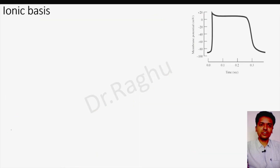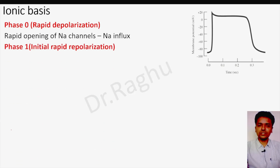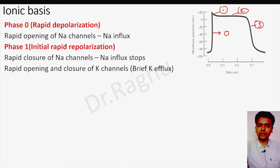To revise: phase zero is the phase of rapid depolarization, caused by rapid opening of sodium channels resulting in sodium influx. Phase one is initial rapid repolarization — the sodium channels that were open during phase zero rapidly close, stopping sodium influx, and there is rapid opening and closure of potassium channels, causing a brief potassium efflux resulting in initial rapid repolarization.